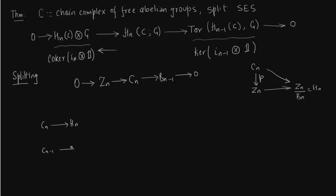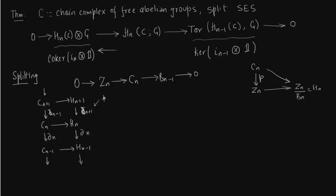We have essentially constructed chain maps from the chain complex to the homology groups tensored with G. The delta map between the homology groups Z_n is trivial — when delta acts on the homology group it gives zero. So the delta map is trivial in the homology part but non-trivial only in the chain complex part.